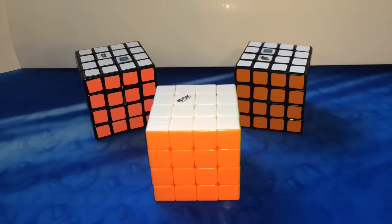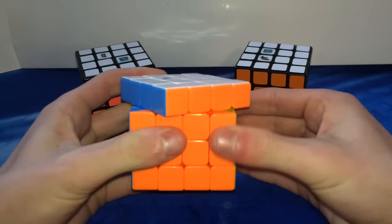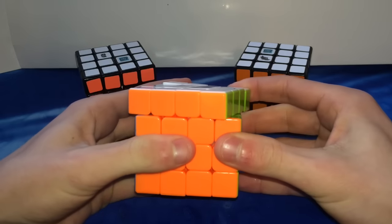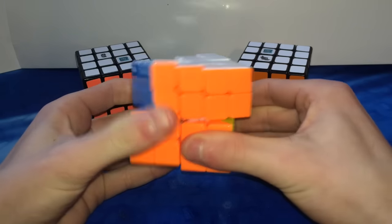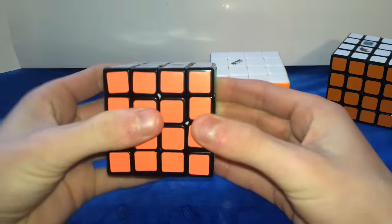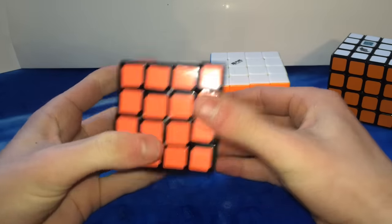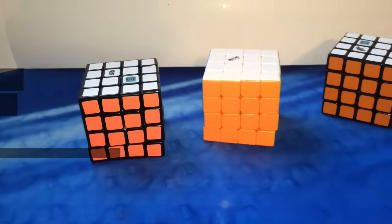Corner cutting on this puzzle is basically equivalent to both the Cyclone Boys G4 and an Aosu. It can do basically two pieces of forward corner cutting on the outer layers and a half a piece of reverse. Same thing with the inner layers, but it is more of a struggle for some reason, even though the inner layers are sometimes easier to turn. This is basically the same considering that the Aosu does the exact same amount of corner cutting, but it may just be a little bit easier with that cube.